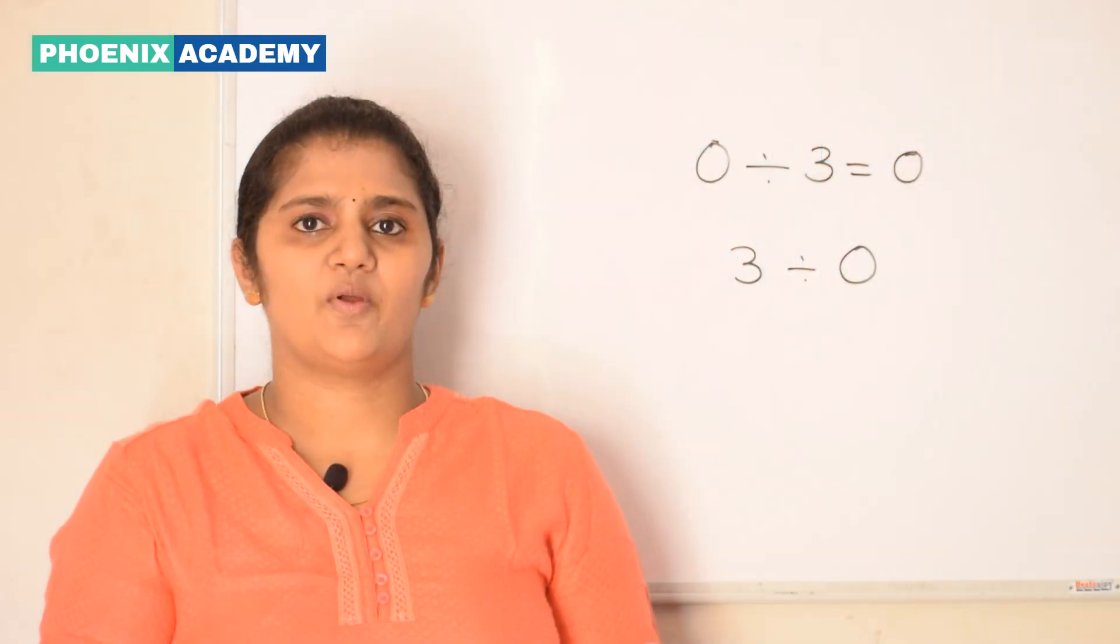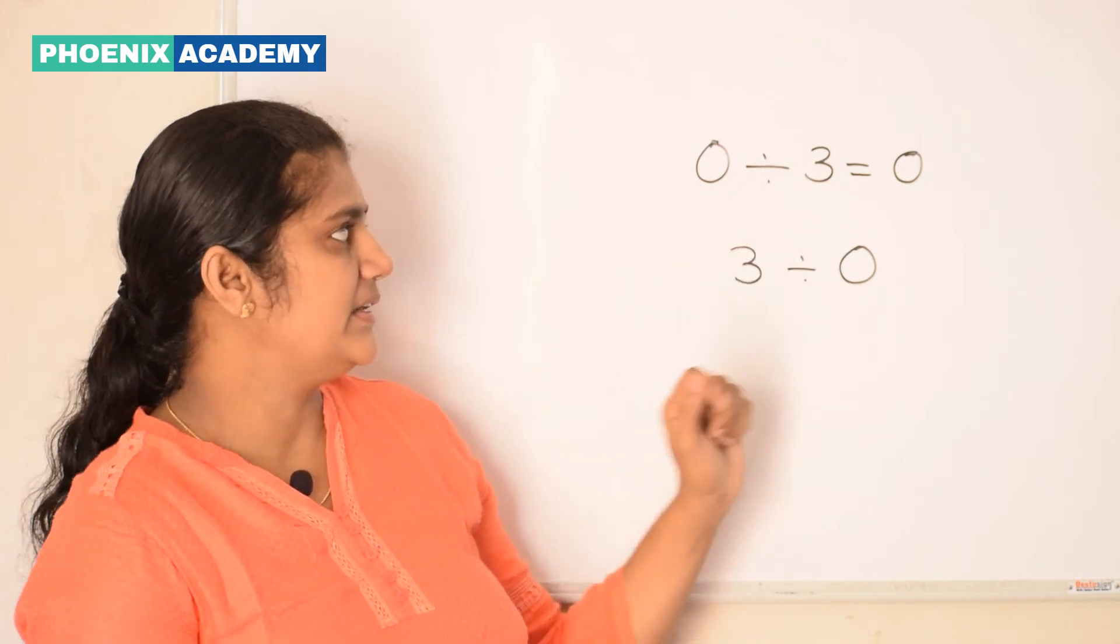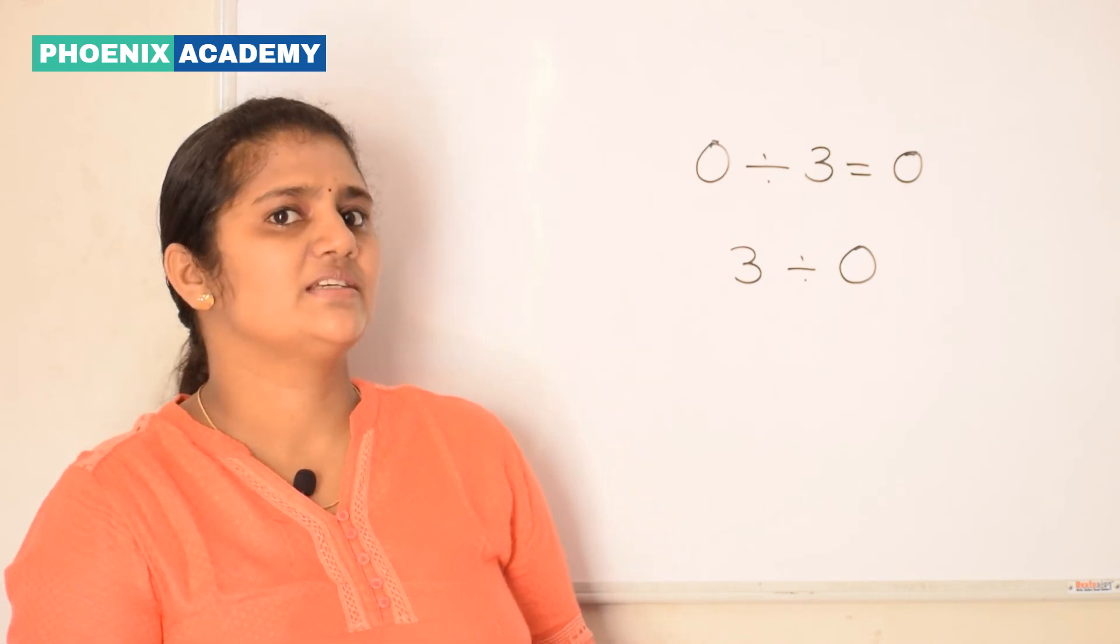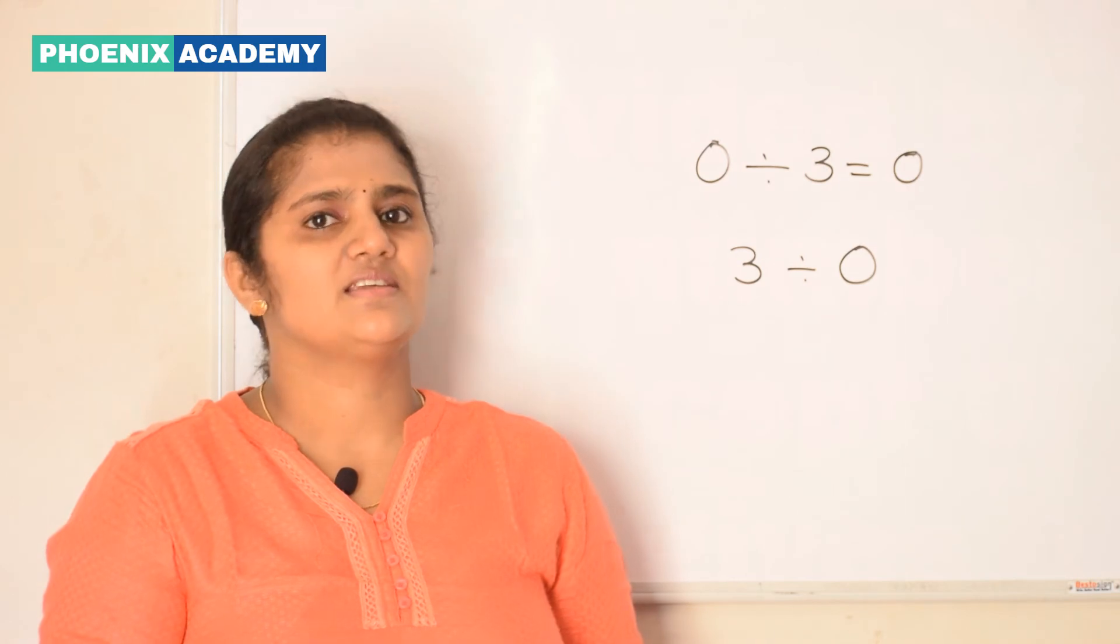The third property is division of 0. 0 divided by 3 is equal to 0. When we divide 0 by any number, the quotient is always 0.